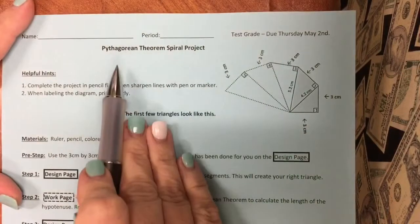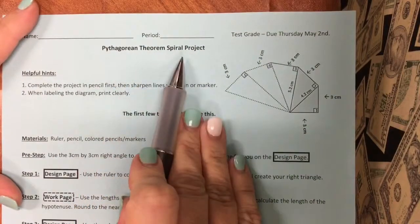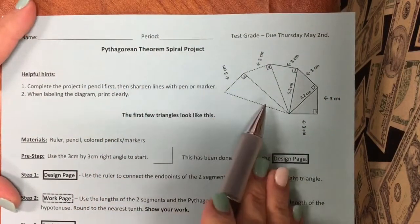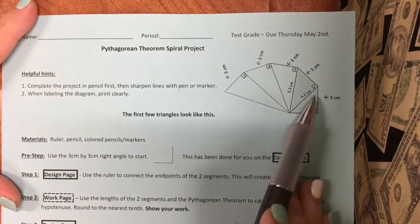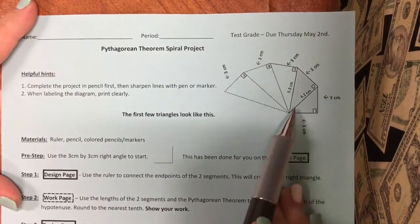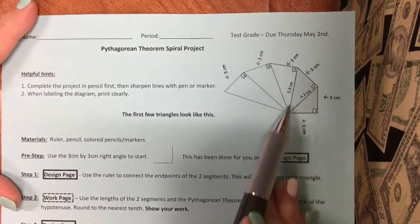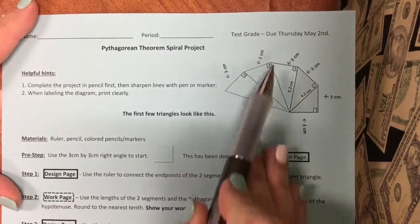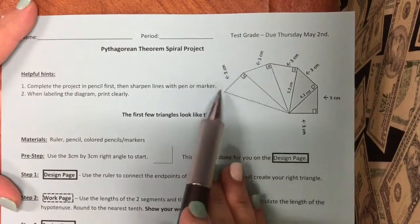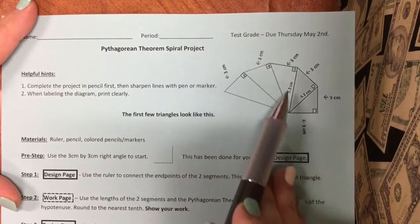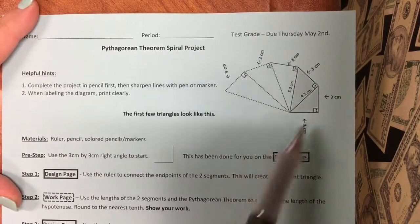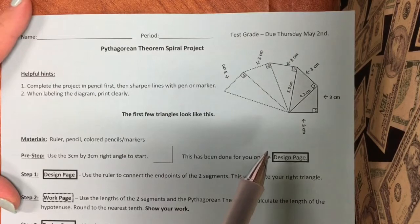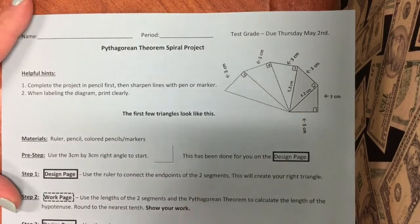So on this spiral project, you're going to start with a triangle, and you're going to keep attaching triangles to it, and it's going to create a spiral. This is what the first few triangles will look like.